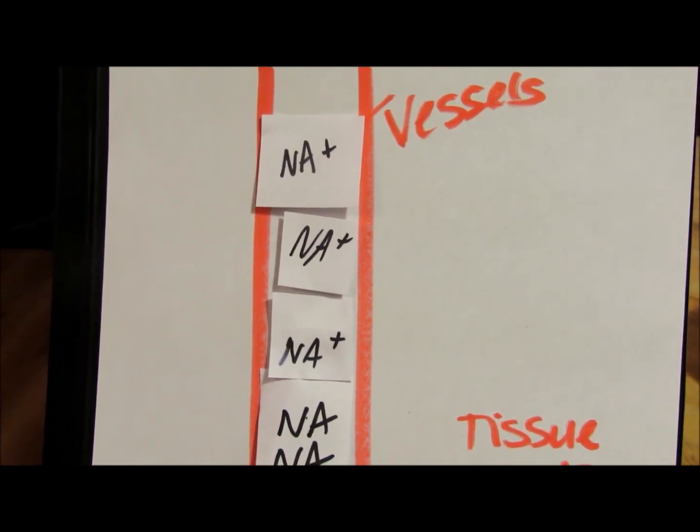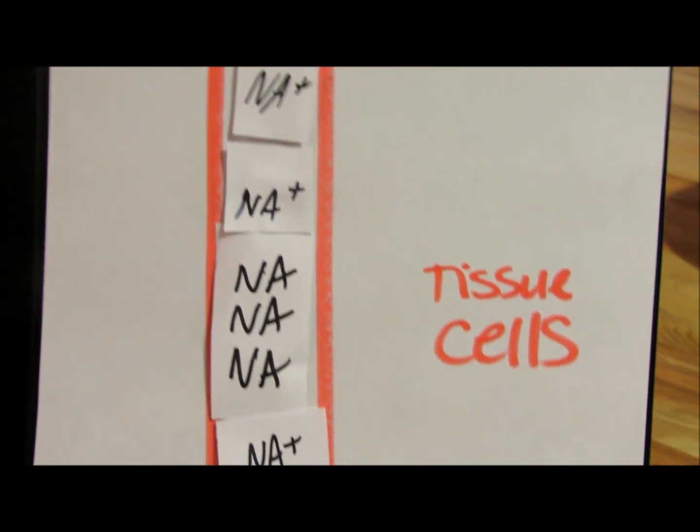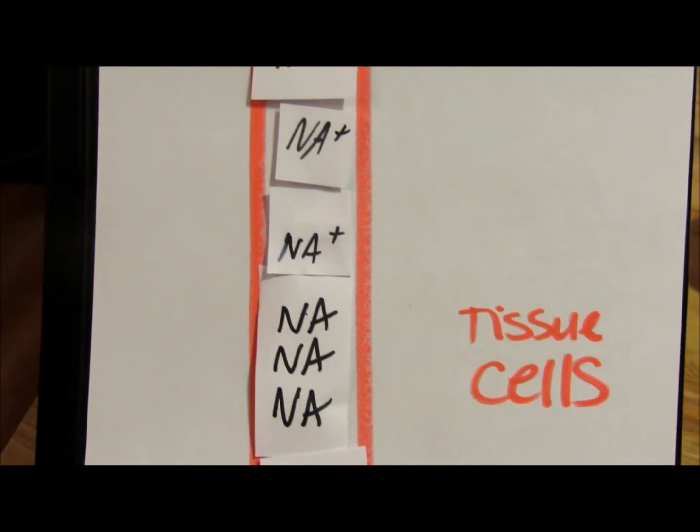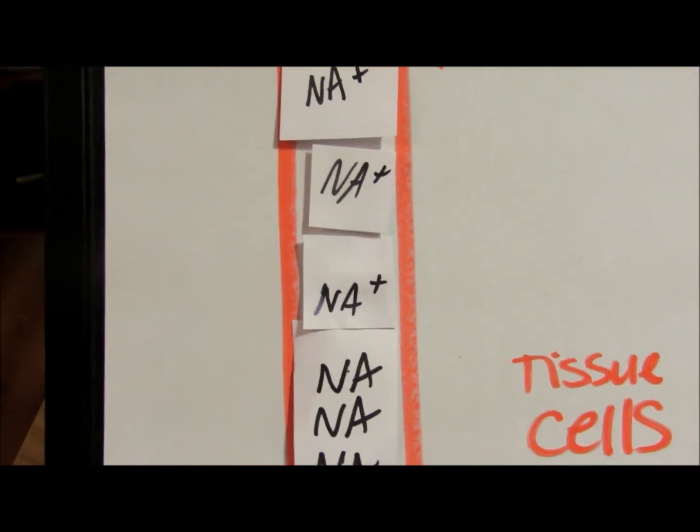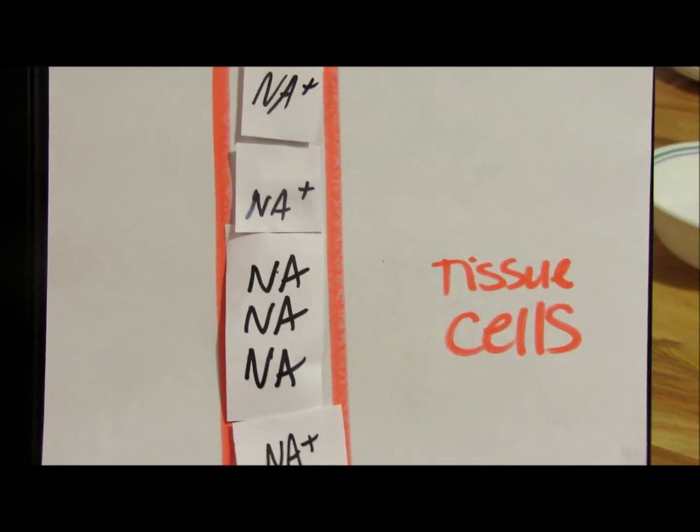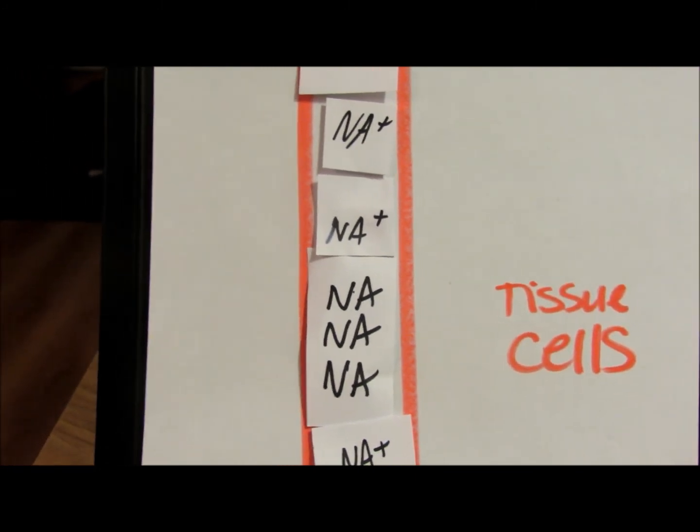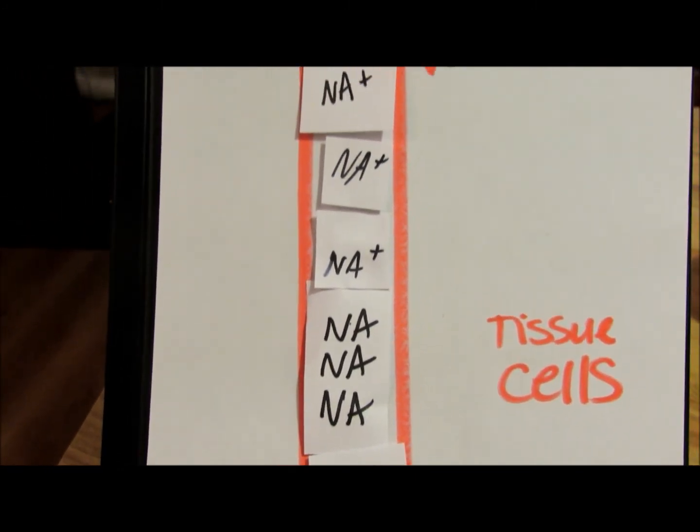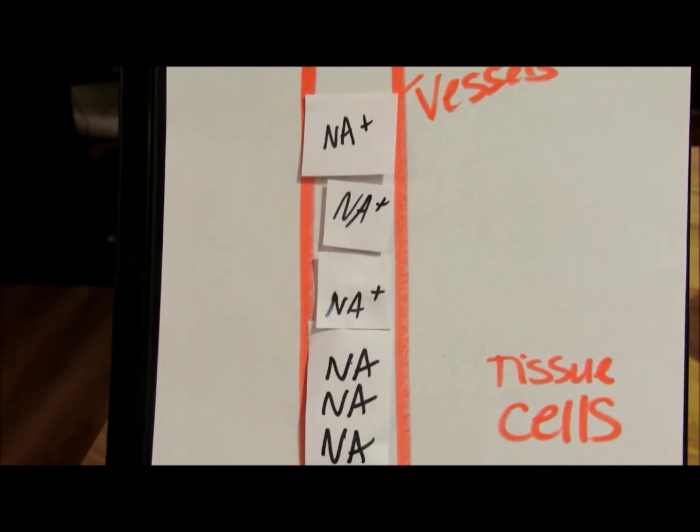So you're going to pull water from the cells into the vessel to help balance things, and that in turn will cause your cells to shrivel or shrink and could possibly shrink to where they die. But that's kind of how the balance happens. So there you go.